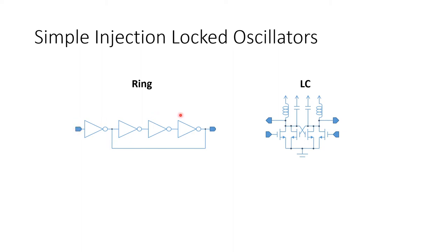A very similar behavior is observed from this injection-locked LC oscillator here. Neglecting the outer NMOS transistors, we would just have an LC oscillator, which would have its own oscillating frequency as determined by the resonant frequency of the tank, 1 over root LC. However, the injecting inputs here, if the injected frequency is close to the resonant frequency, can influence the frequency and phase at the output of this injection-locked LC oscillator.